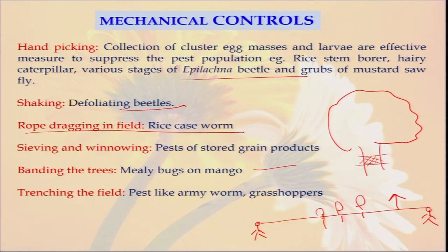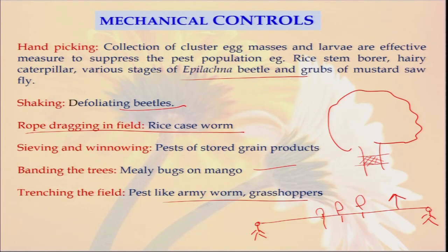Similarly, there is also trenching for army worms. Army worms have a very high capacity to invade and they mostly invade the crop field at the time of night. So if we dig some trench around our farm, they cannot come into the farm.